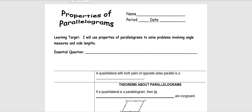Today's lesson is on properties of parallelograms, so let's start with the definition. A quadrilateral with both pairs of opposite sides parallel is called a parallelogram.